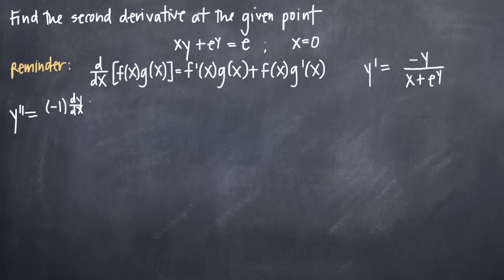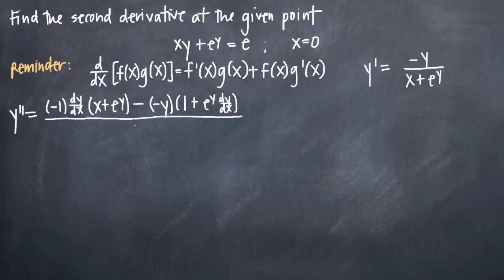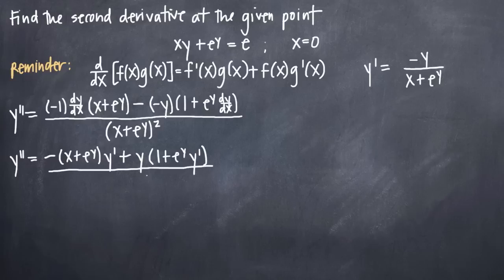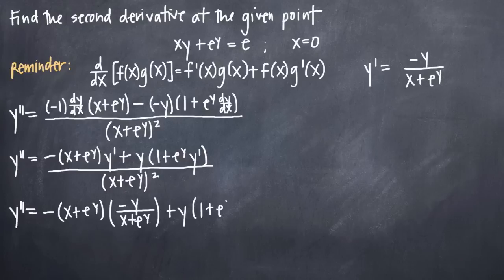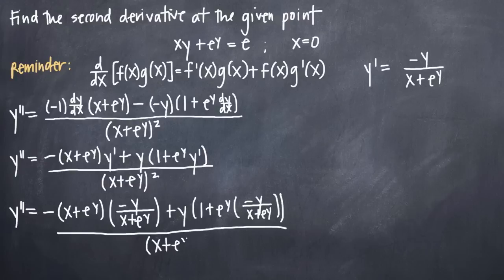Use implicit differentiation and apply quotient rule to take the second derivative. Plug in the first derivative for y prime. Simplify as much as possible.